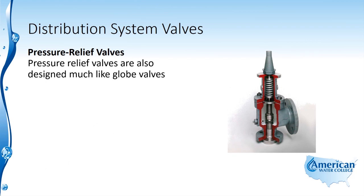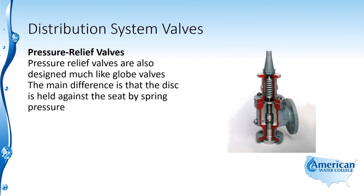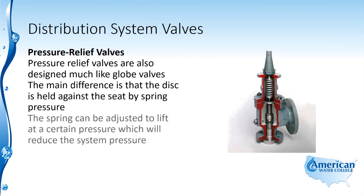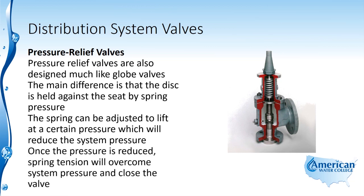Pressure relief valves are also designed much like globe valves. The main difference is that the disc is held against the seat by spring pressure. The spring can be adjusted to lift at a certain pressure, which will reduce the system pressure. Once the pressure is reduced, spring tension will overcome system pressure and close the valve.